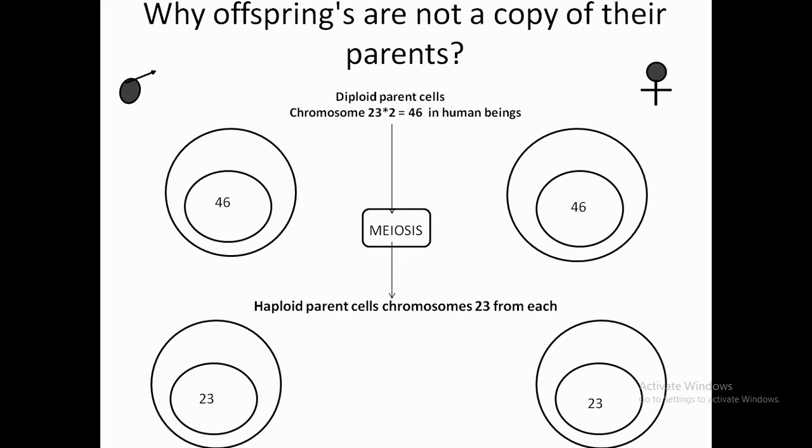Now we will see why offspring are not a copy of their parents but instead a mix. From previous diagrams and examples, we have seen that some characters come from the male parent and some from the female parent, and the child is a mix carrying 50% from both parents. This is the reason variations occur.